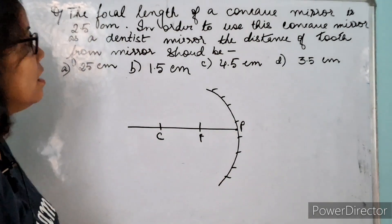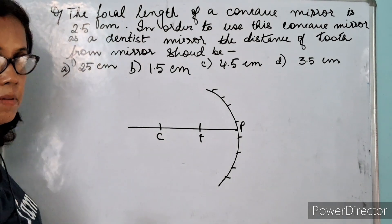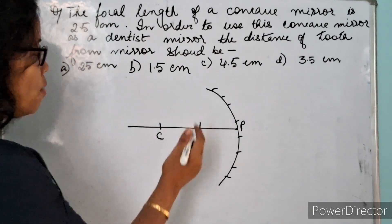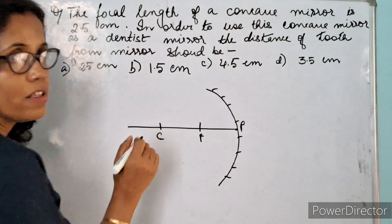Now in order to get a magnified and erect image in case of a concave mirror, the object has to be placed between the pole and the focus.